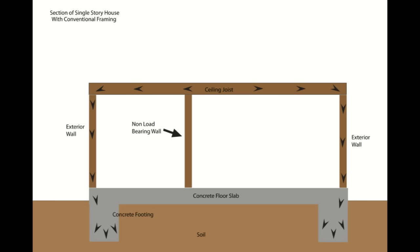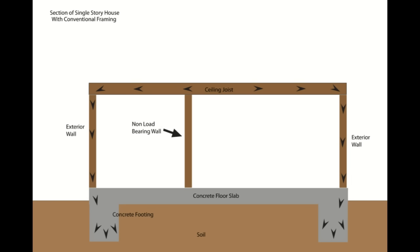Here's a picture of a non-bearing wall. Don't be confused — just because the weight is being distributed around this wall and not going through it doesn't mean it's a wall you can actually remove. It could still be another structural member of the home. This is where a lot of homeowners and do-it-yourselfers get confused — they assume they can remove a wall, cut into it, and all of a sudden their building starts to lean.